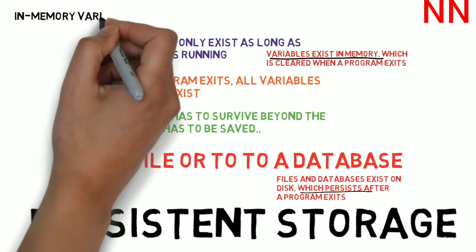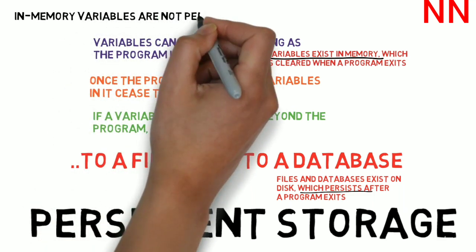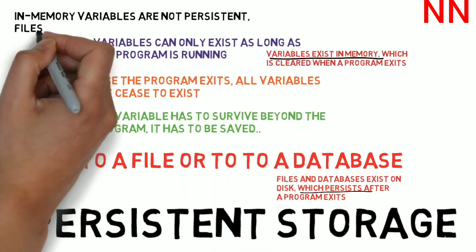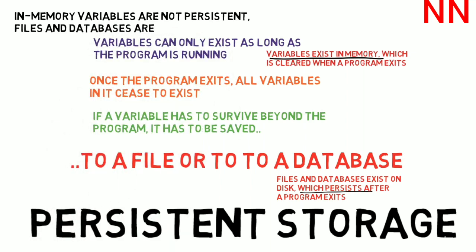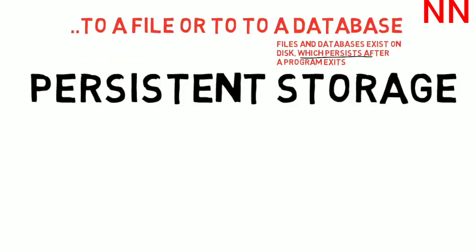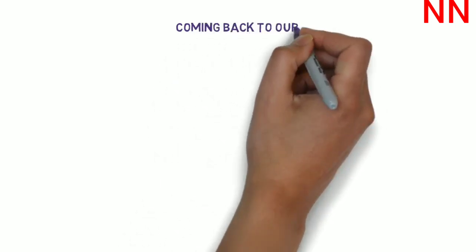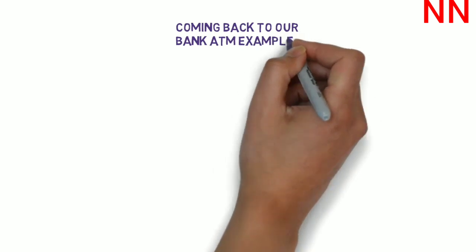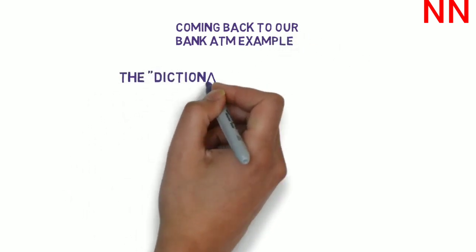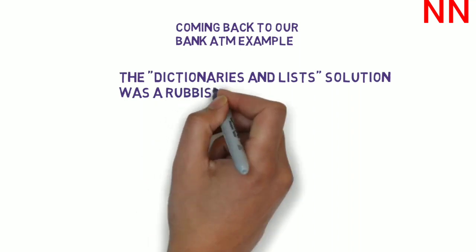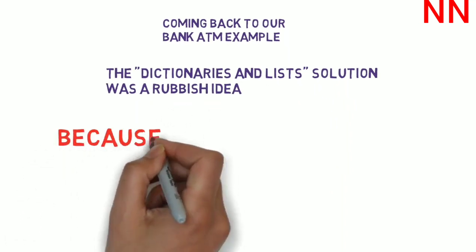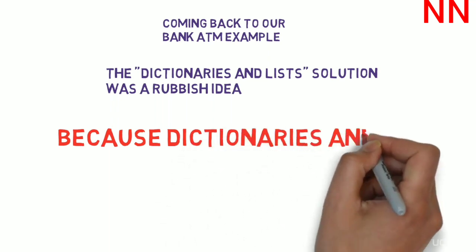In memory variables are advantageous in the sense that accessing them and working with them is really fast. Whereas, from files or databases, you will have to have a read operation and then a write operation later on to save the data. But, in memory variables do not have persistent storage. So, whenever you need persistent storage, you need to use files or databases. In the bank ATM example, clearly the storage of data like the account balance in each of the user's accounts as well as the total amount of money that the bank has to distribute is really important even beyond the exit of the program. So, the dictionaries and list solution was a rubbish idea because the storage was not persistent.